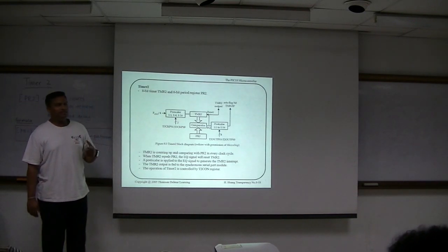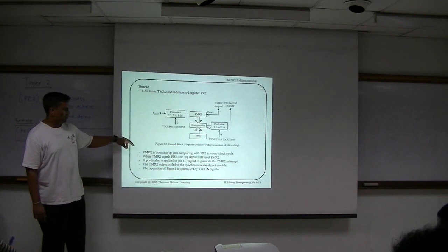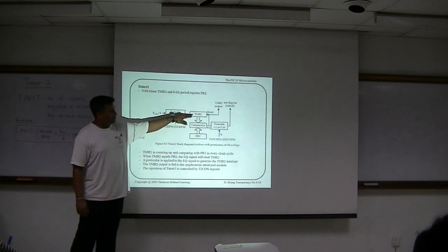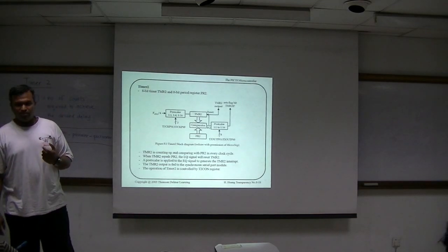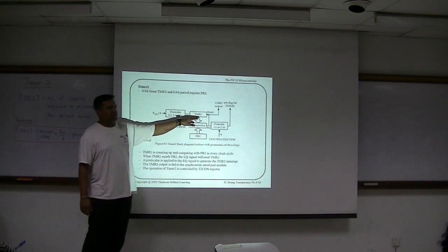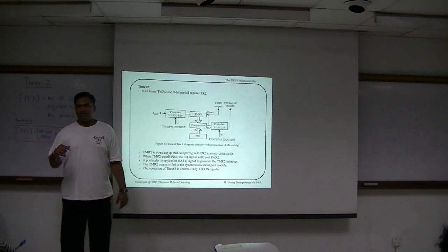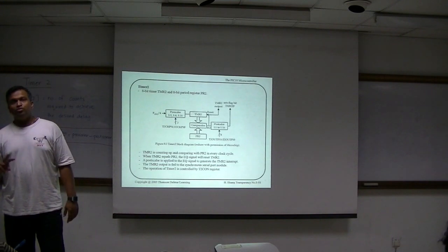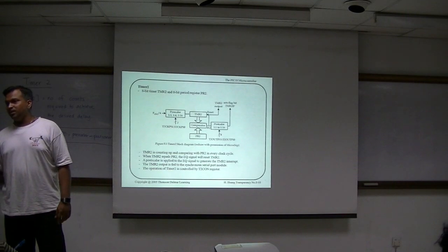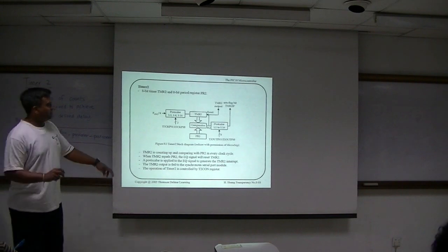This is the Timer 2 register. It is similar to Timer 0 low and Timer 0 high. This is the Timer 2 register — this is where it will actually count up. Same concept like Timer 0 low and Timer 1 low, Timer 1 high. Timers 0 low and Timer 0 high are both used because we use it as 16-bit. If you configure Timer 0 as 8-bit, we will only use Timer 0 low. This Timer 2 is the same like that.